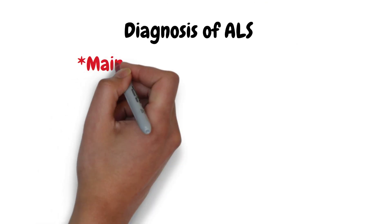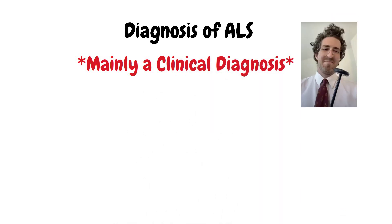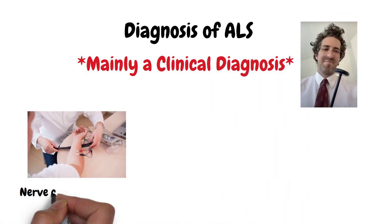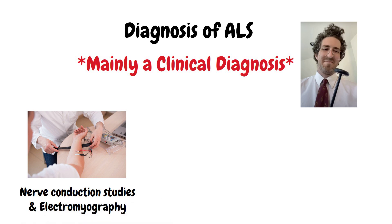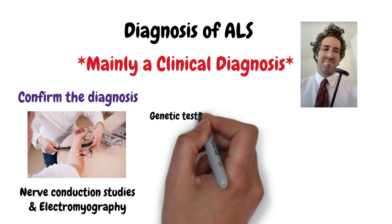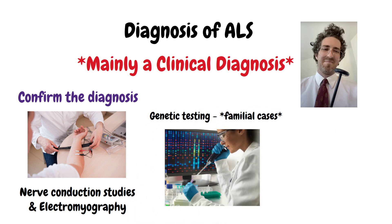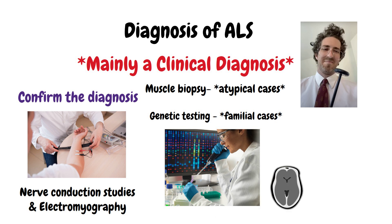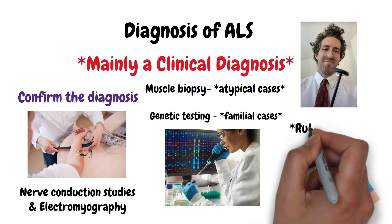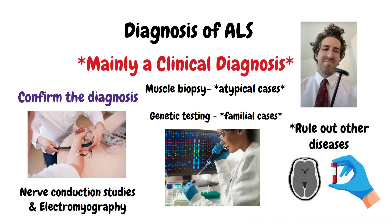ALS is mainly a clinical diagnosis. Nerve conduction studies and needle electromyography are useful for confirming the diagnosis. Genetic testing may be performed to identify genetic defects in some familial types of ALS. Muscle biopsy may be considered if the presentation is atypical. Imaging such as MRI of the brain and spinal cord, and lab tests, can be performed to rule out other diseases.